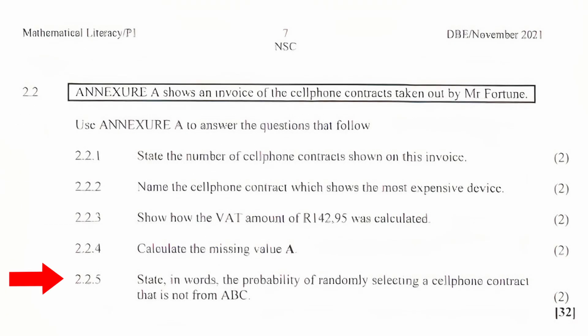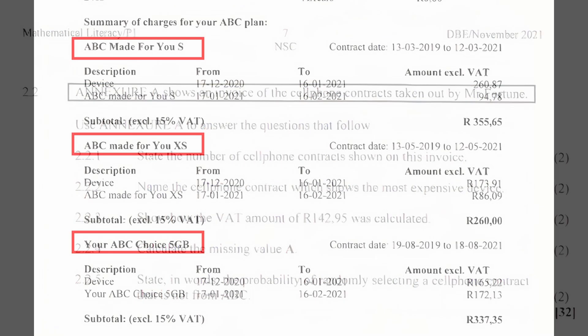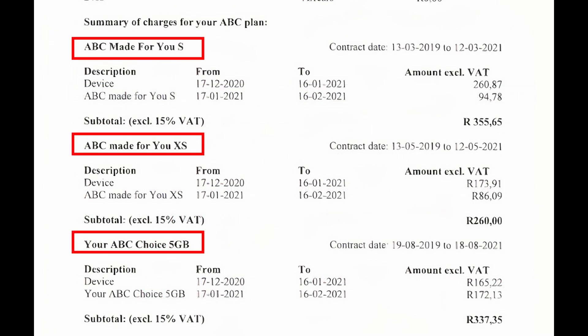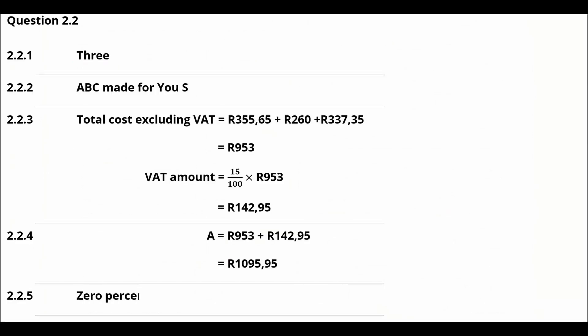Question 2.2.5: State in words the probability of randomly selecting a cell phone contract that is not ABC. Since all the cell phone contracts are ABC, the probability of randomly selecting a contract that is not ABC is zero percent.